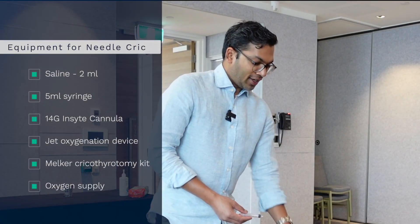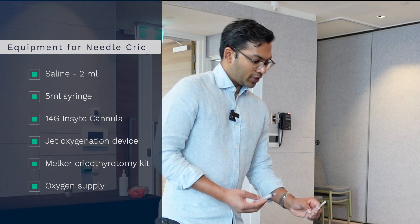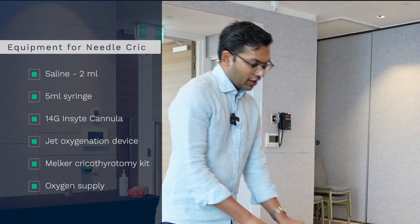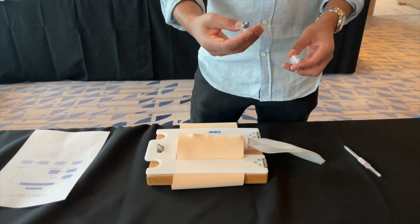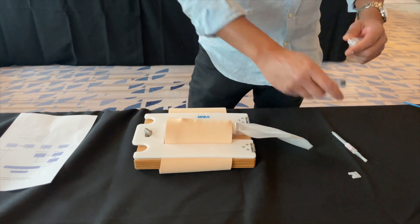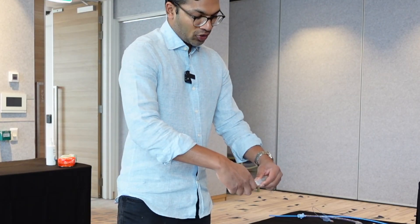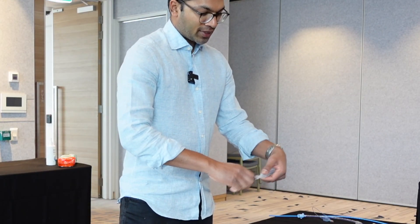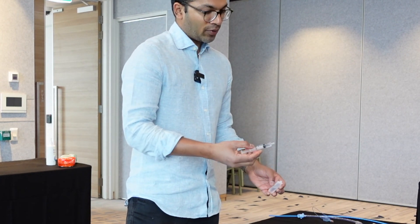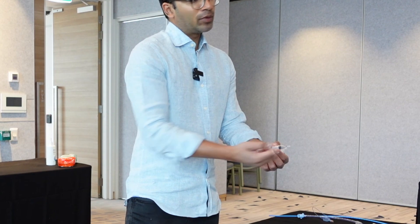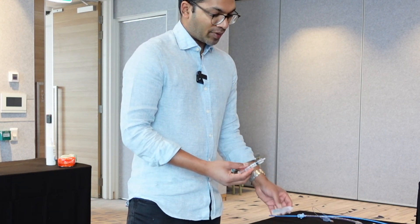The equipment I need is some saline, a 14-gauge Insight cannula, a 5ml syringe, and I've got to make sure I've got some kind of rapid oxygen or jet ventilation oxygen device — here we have the Leroy Rapid O2 device and some oxygen. First thing I do is take a 5ml syringe and put 2ml of saline, because you want to be able to aspirate air into the chamber to confirm you're in the right spot.